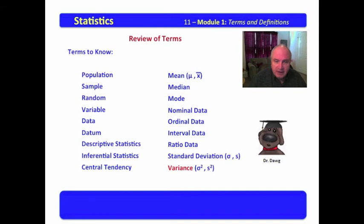Variance. Variance is the square of the standard deviation, represented in the population by sigma squared, and represented in the sample by s squared.